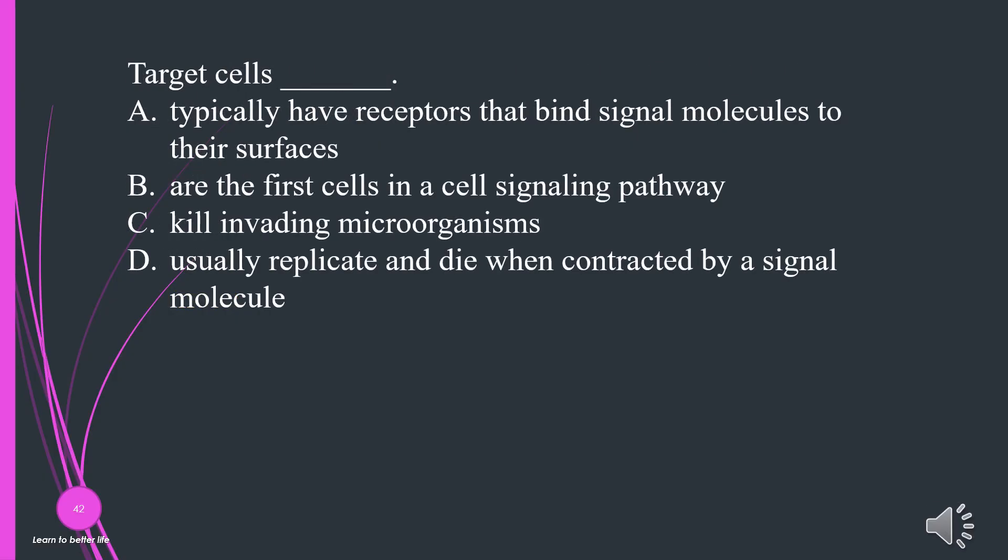Target cells are? A. Typically have receptors that bind signal molecules to their surfaces. B. Are the first cells in a cell signaling pathway. C. Kill invading microorganisms. D. Usually replicate and die when contacted by a signal molecule. The answer is A, typically have receptors that bind signal molecules to their surfaces.